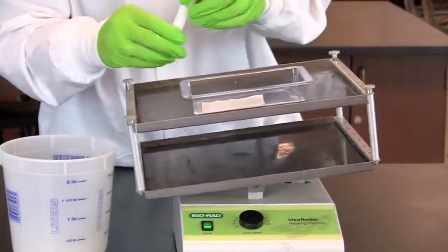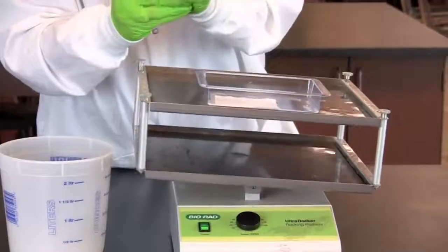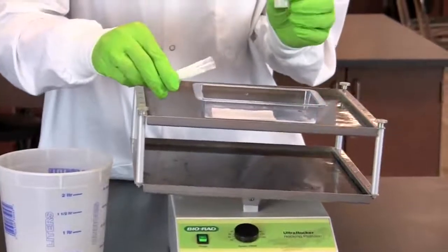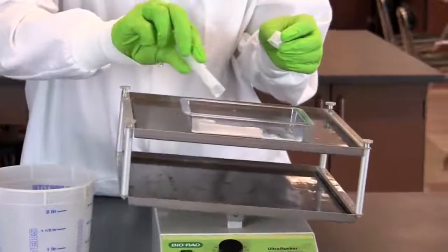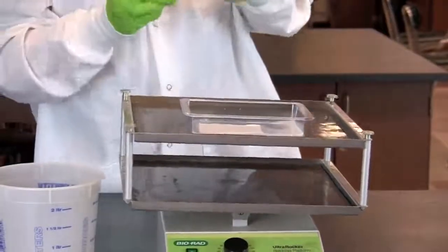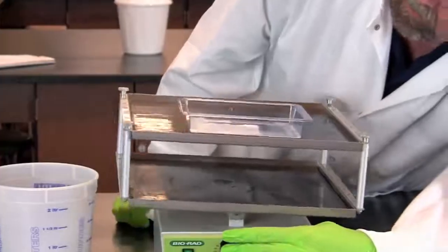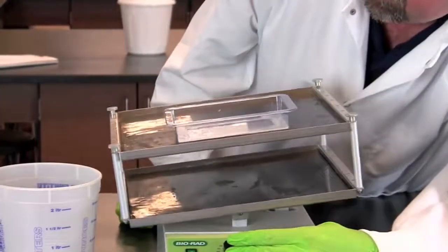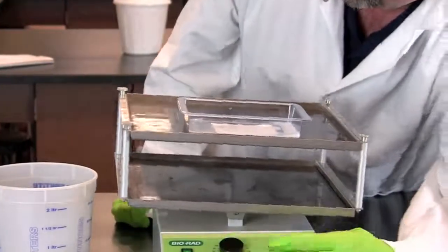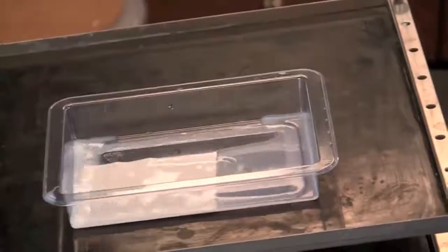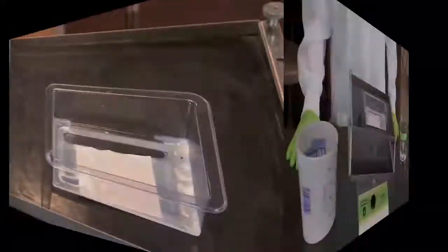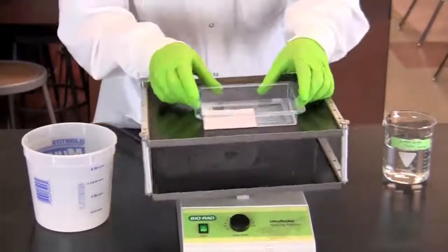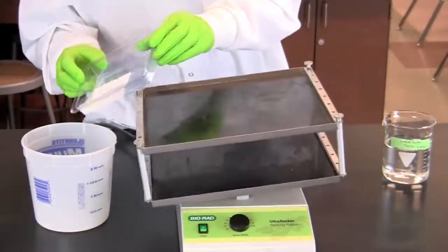Add 10 milliliters of primary antibody. Incubate for 10 to 20 minutes on a rocking platform. The platform should be set at a faster setting to ensure constant coverage of the membrane. Pour off the primary antibody.